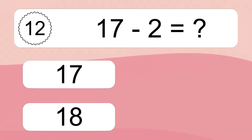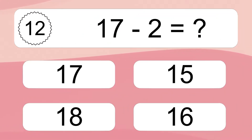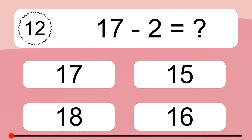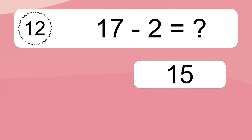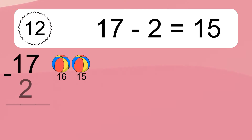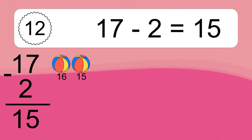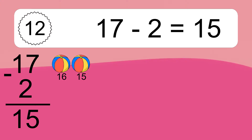17 minus 2 equals what? 17 minus 2 equals 15. Let's count it. 16, 15.